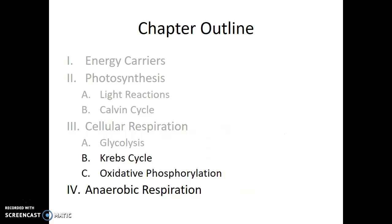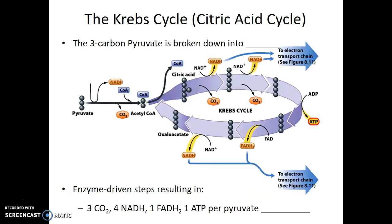The Krebs cycle, or the citric acid cycle, takes the pyruvate made in glycolysis and breaks it down all the way into carbon dioxide (CO2). There's a series of reactions where high-energy electrons are taken away, some ATP is made, and carbon dioxide is released. This cycle repeats — since we received two pyruvate per round of glycolysis, the cycle happens twice per glucose molecule. The enzyme-driven steps result in three CO2, four NADH, one FADH2, and one ATP per pyruvate molecule.